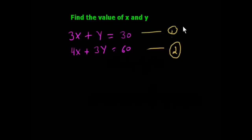If we multiply equation 1 with 4 and equation 2 with 3, both will be common and these will be 0, and we will calculate the value of y.